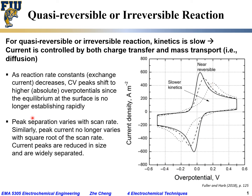Another related observation is peak separation between the positive anodic and the negative cathodic peaks. The peak separation now changes with scan rate. Earlier we said if the reaction is reversible, the peak separation between the anodic and cathodic is a constant. But if the reaction becomes more and more irreversible, then the peak position would change with scan rate.